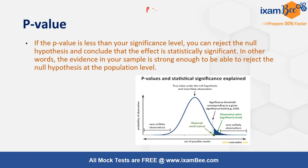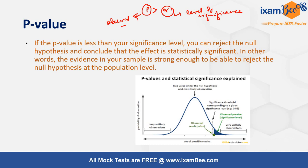There are two possibilities depending on whether your p-value is greater than or less than your alpha value. Alpha is called the level of significance. The key distinction is that the p-value is the observed level of significance, whereas the alpha value is the acceptable level of significance — set by the experimenter before the analysis — representing the probability of error the researcher is allowing for.